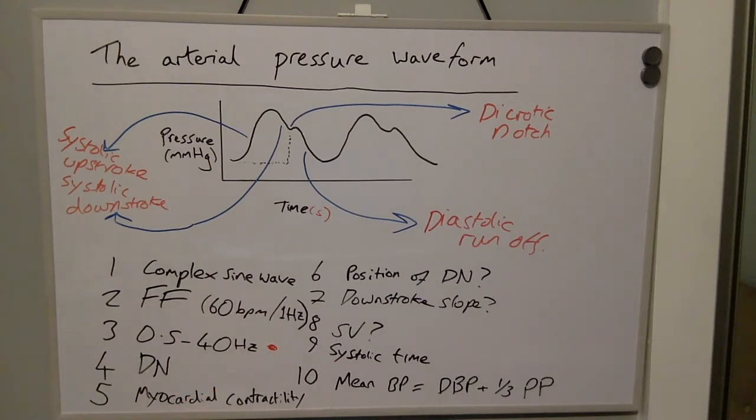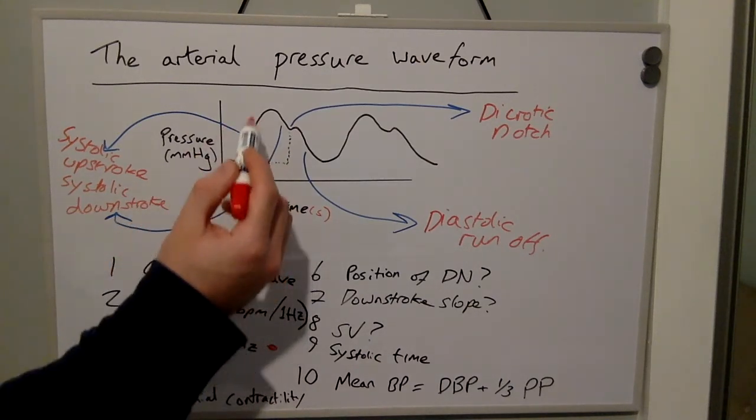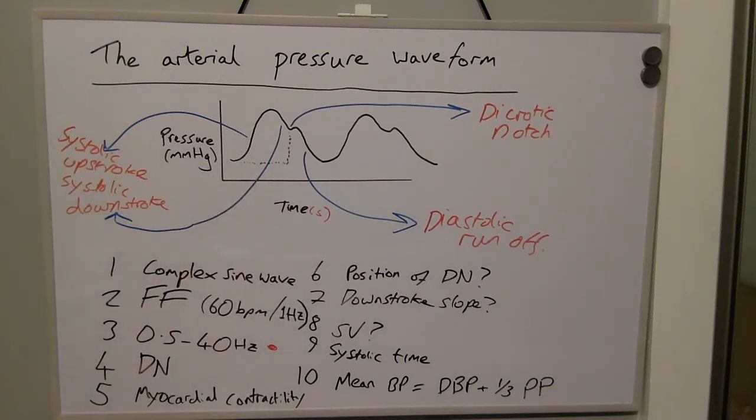The dicrotic notch represents changes in pressure because of vibrations caused by the closure of the aortic valve. The rate of rise of the systolic upstroke relates to myocardial contractility.